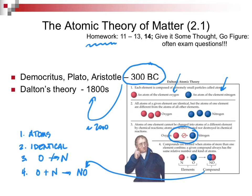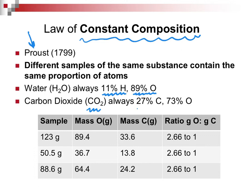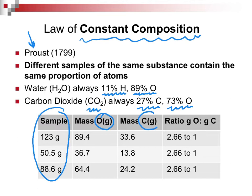There are three laws, and students often have a hard time with them. The first is constant composition, attributed to Proust in 1799. Different samples of the same substance contain the same proportion of atoms. Water always has 11% hydrogen and 89% oxygen; CO₂ always has 27% carbon and 73% oxygen. They took samples of different masses, analyzed them for oxygen and carbon, and found a constant ratio — that's where constant composition comes from.